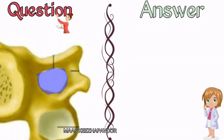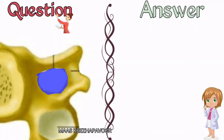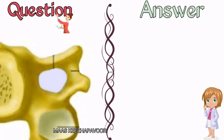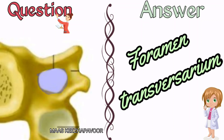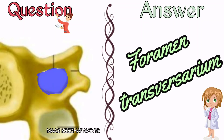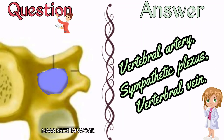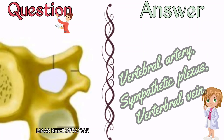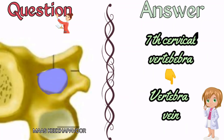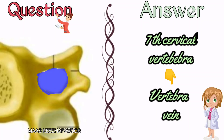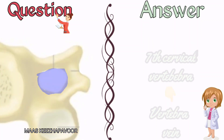Identify the foramen and name the structures passing through it. The marked foramen is foramen transversarium. The structures passing through this are vertebral artery, sympathetic plexus, and vertebral vein. In the foramen transversarium of the seventh cervical vertebra, only vertebral vein passes.